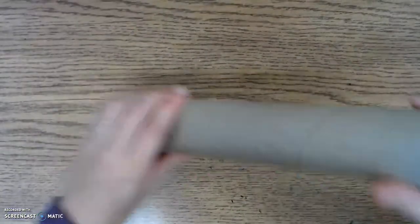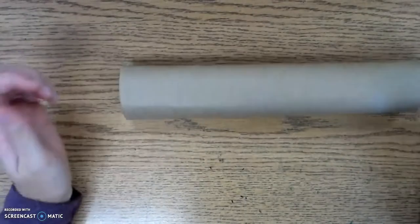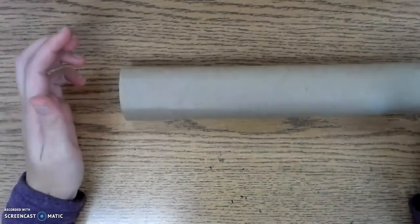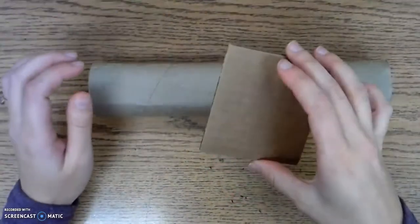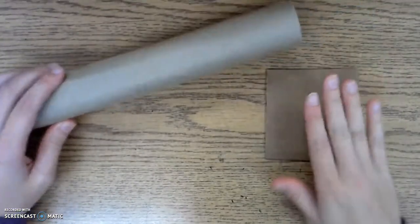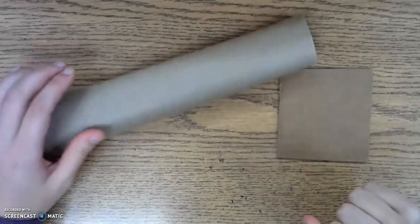First you need a cardboard tube like a paper towel tube or a toilet paper tube and you need your structure that you're going to put your flange on. So if it's putting it on a house or putting it on another piece of cardboard, whatever you're going to put your flange on you need to have already with you.